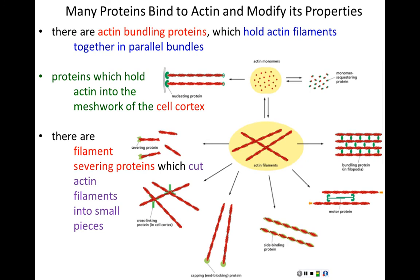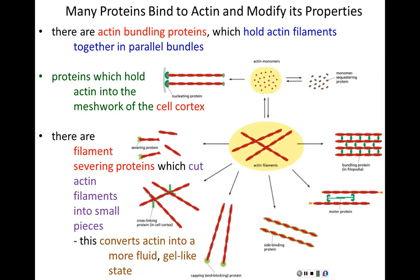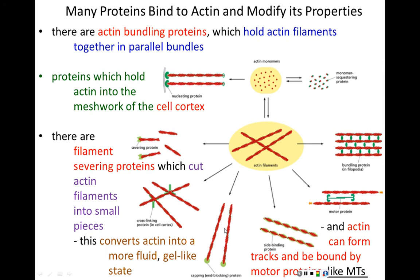There are severing proteins which actually cut actin filaments into smaller pieces. This converts actin into a much more fluid, less static structure, giving this actin-containing substance a gel-like state. It tends to thicken up the viscosity of the cytoplasm without making it too static, allowing the cell to move and be a little bit more fluid. Actin can also create long extended filaments used for cellular movement that can be bound by motor proteins.